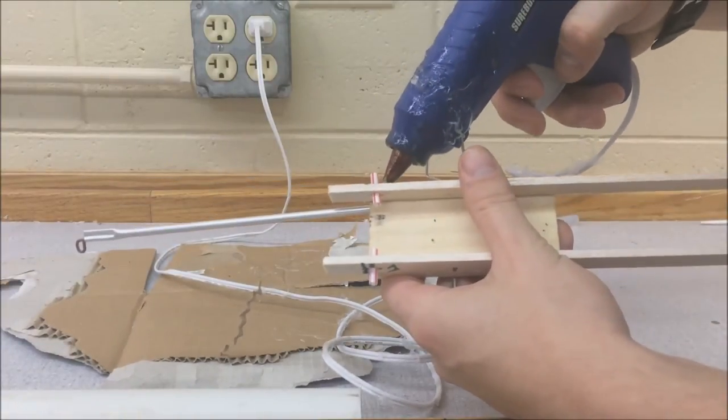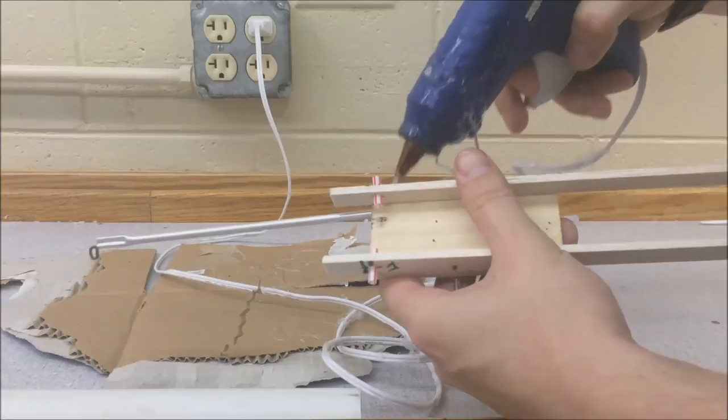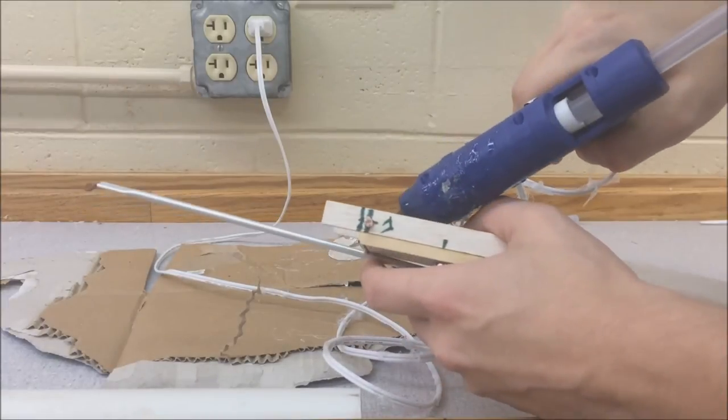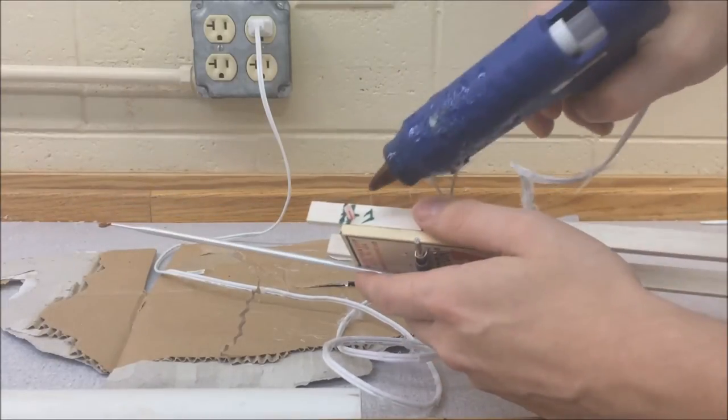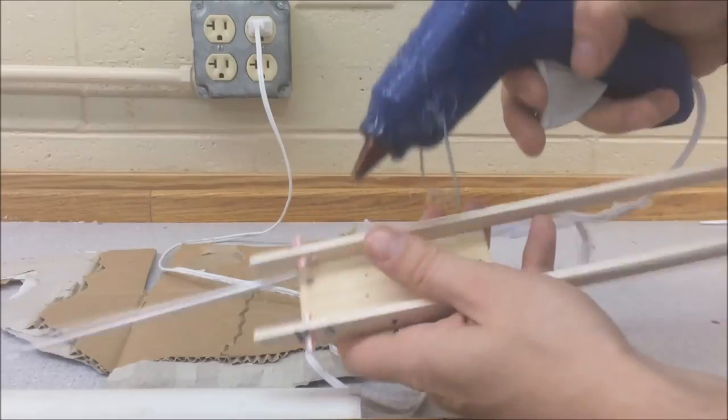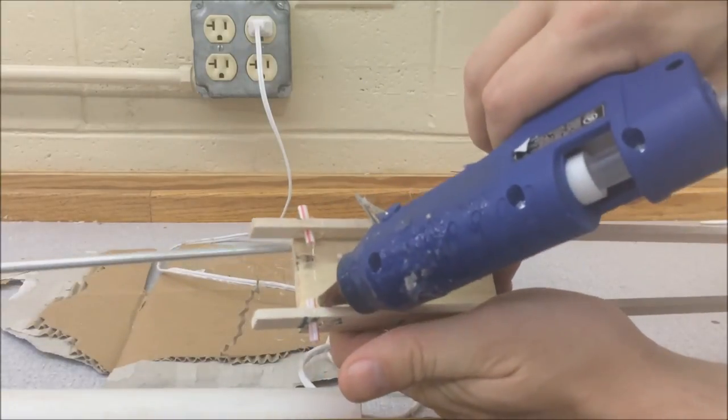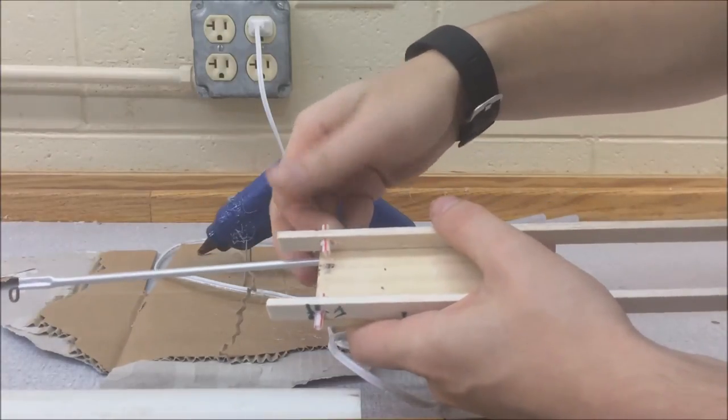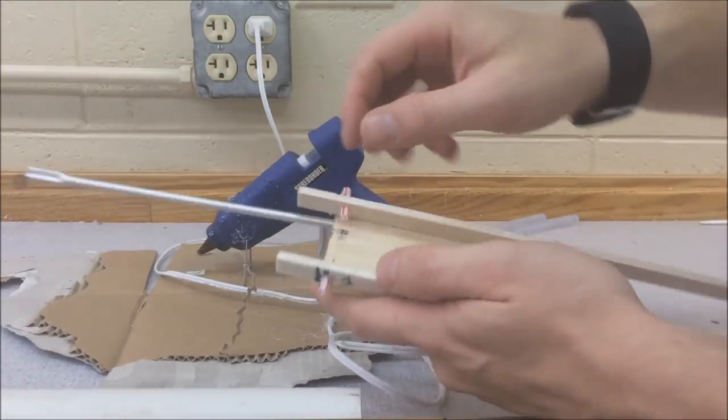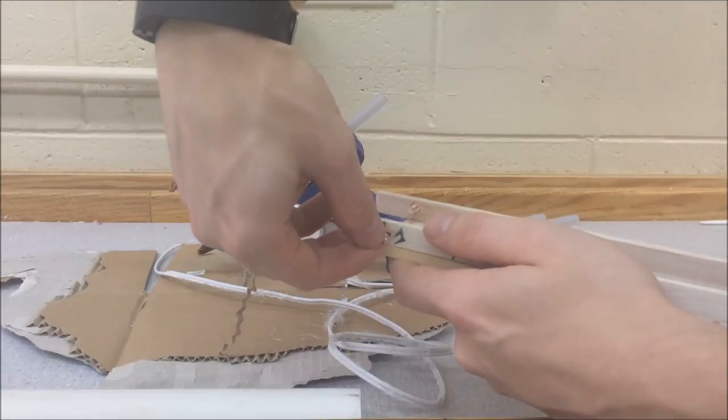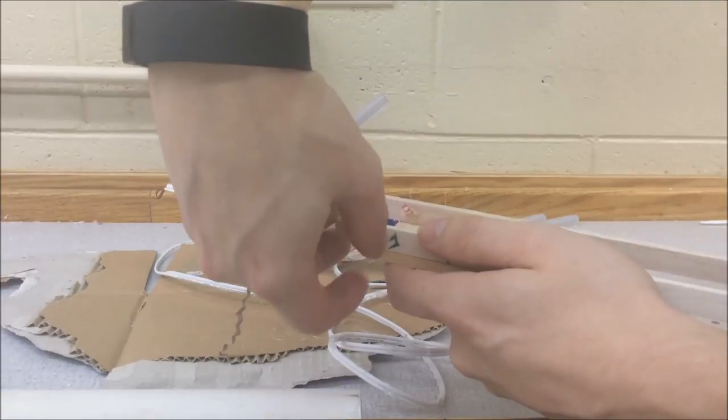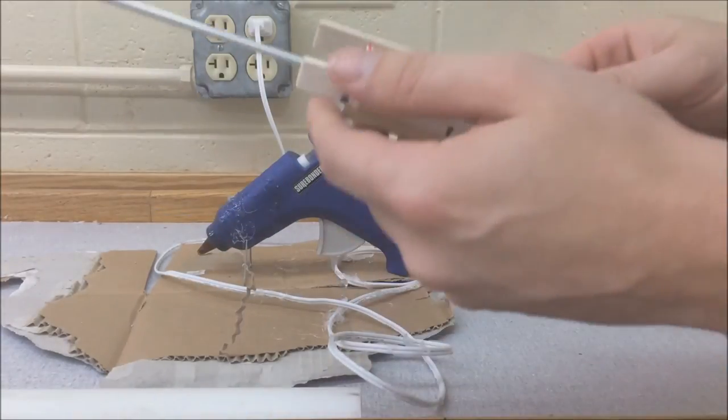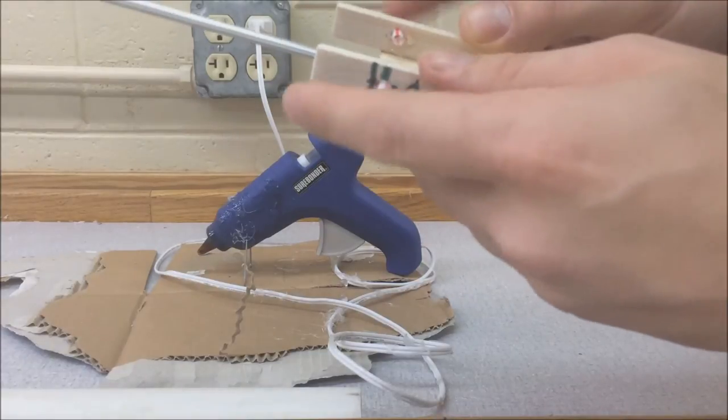I'm going to put a dab of glue here, put a dab of glue here, put a dab of glue here, put a dab of glue inside of here. Okay, now I've got all that glue, take my fingers, spin it around my straw, take my fingers again, spin it around my straw. I'm going to give it a second.